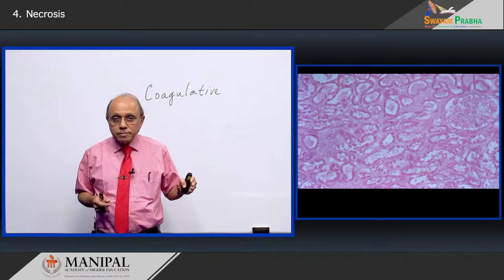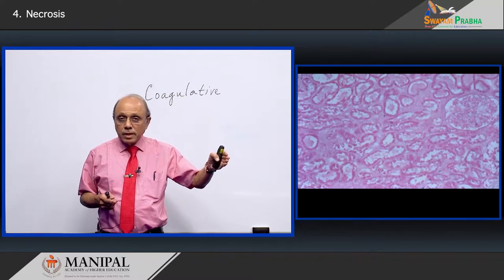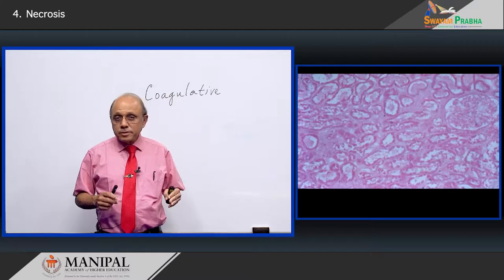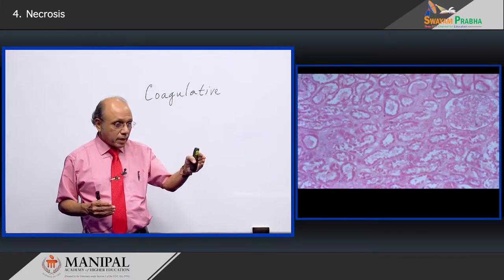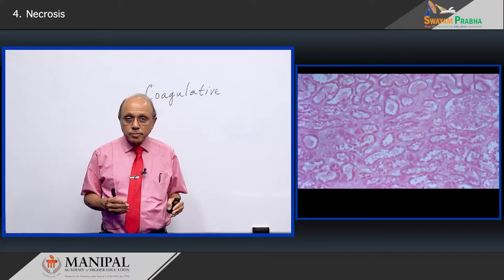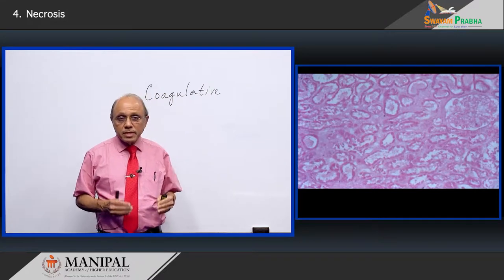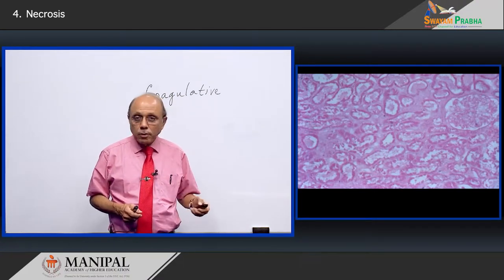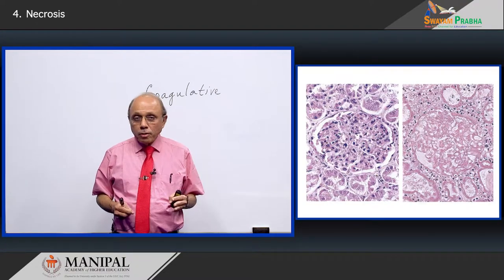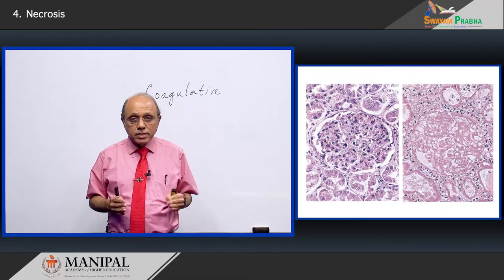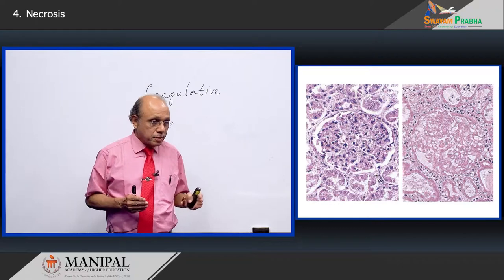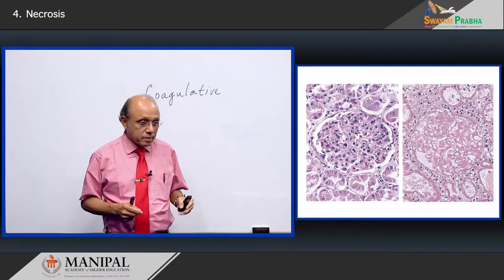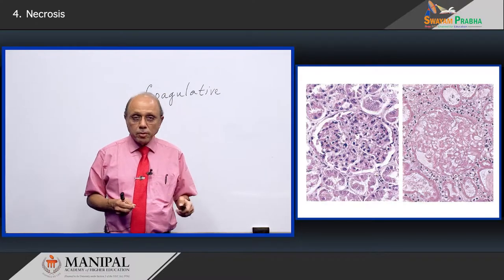The same process of coagulative necrosis is now seen in a renal infarct. If you look at this slide, you will see the renal tissue again having ghost outlines. You can vaguely recognize the glomerulus and the tubules, yet you cannot see the nuclear details — the contrast that would normally be present is absent. This is again characteristic of coagulative necrosis. You can see how the normal glomerulus compares with the glomerulus affected by coagulative necrosis.